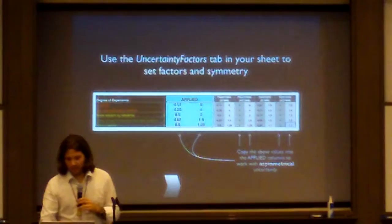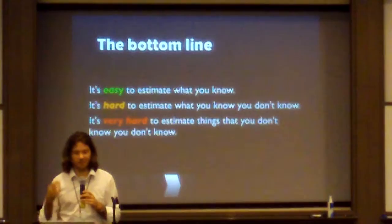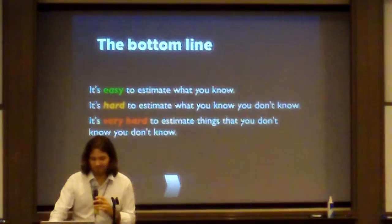So, the bottom line is, it's easy to estimate what you know, which is five. It's hard to estimate what you know you don't know. We have no idea, that would be three. It's very hard to estimate things that you don't know you don't know. That is the... Sounds kind of obvious, but...